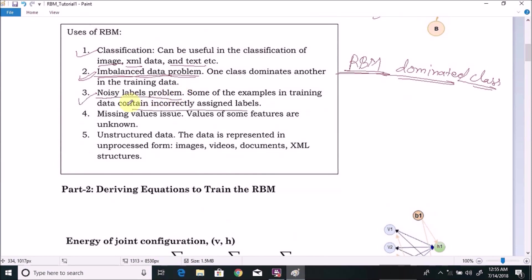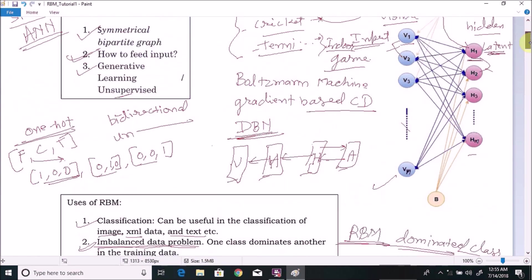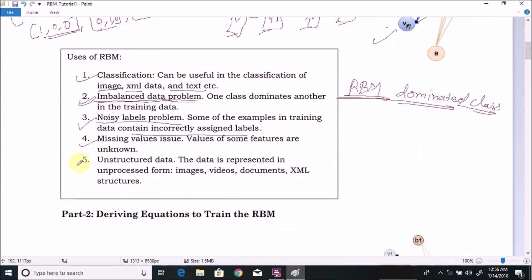Next is missing value issue. Several times the input data or features are missing. So we can train the Restricted Boltzmann Machine and identify the input value for any given latent value or for any of the nearest input value. Next part is unstructured data. We can use the RBM as an unsupervised system for unstructured or unprocessed data like images, videos, documents, XML kind of things. So these are the simple use cases of Restricted Boltzmann Machine.